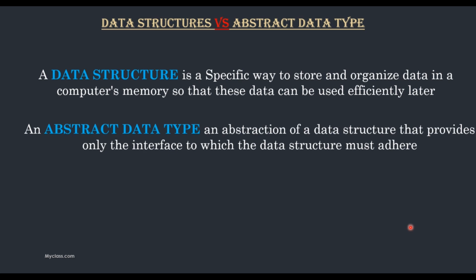What is Abstract Data Type? An Abstract Data Type is an abstraction of a data structure that provides only the interface to which the data structure must adhere. That means when we are writing a program or when we are writing an algorithm, first we are selecting the data structure that is suitable for our program. The data structure and the data and the related operations all together we can call it as an Abstract Data Type.